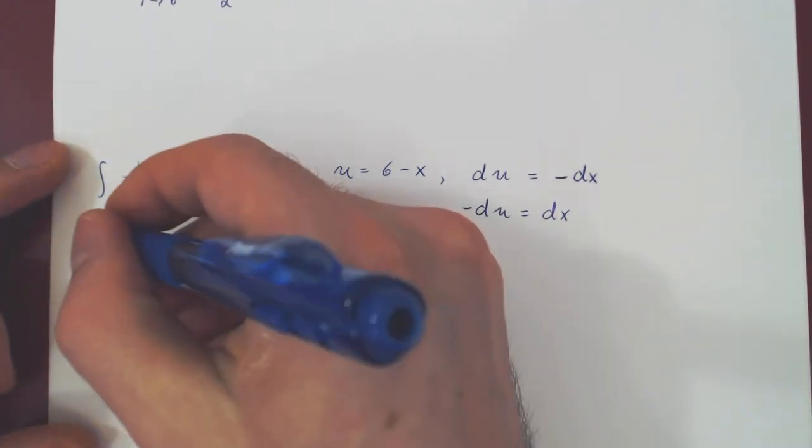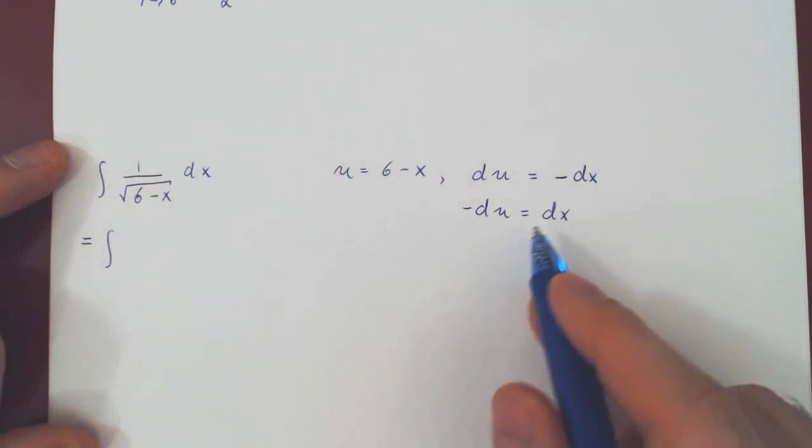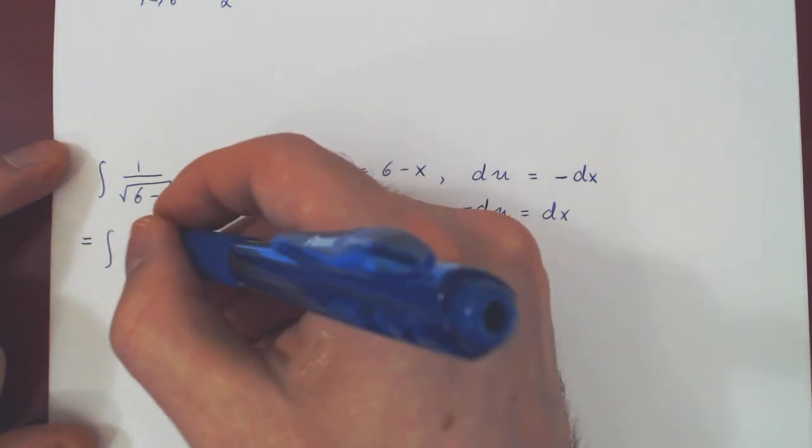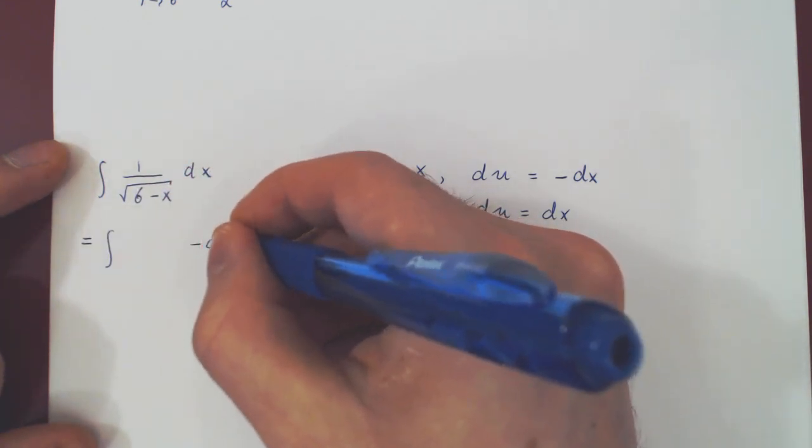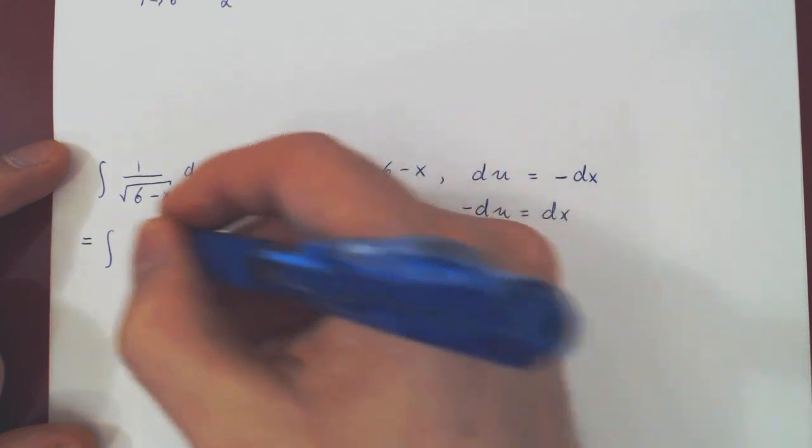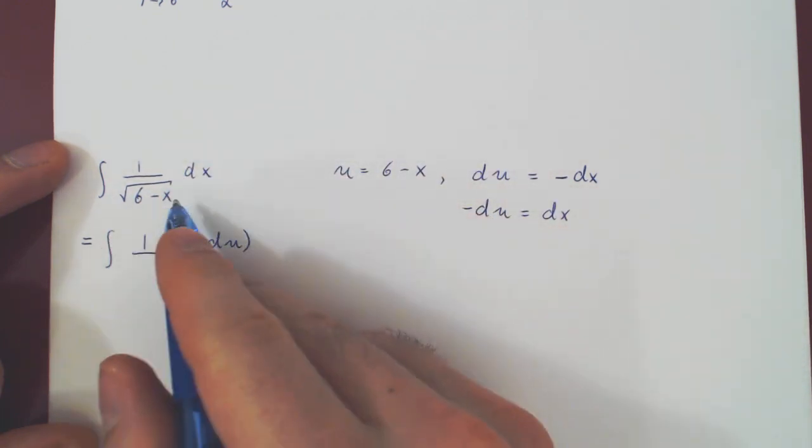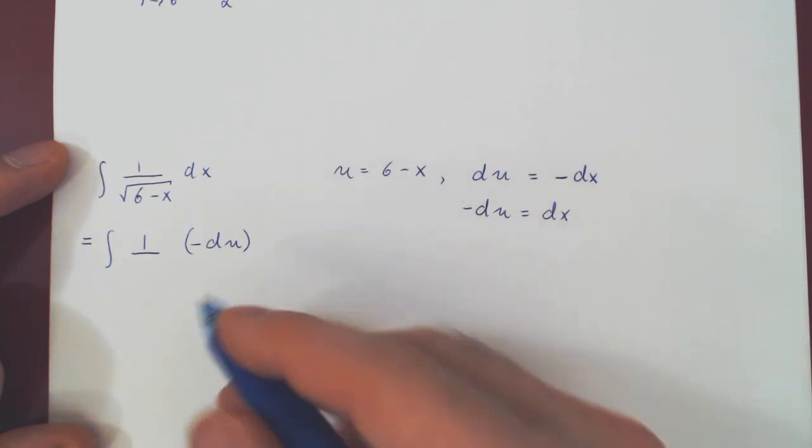And so now the integral becomes the integral of dx, negative du, times 1 over the square root of 6 minus x, which is simply u.